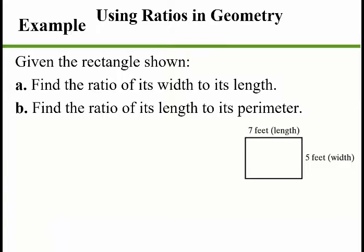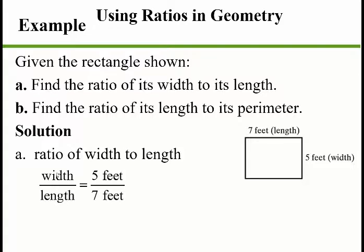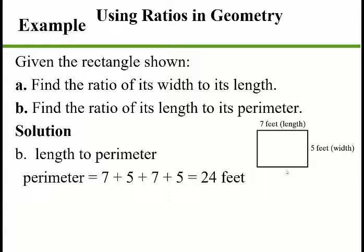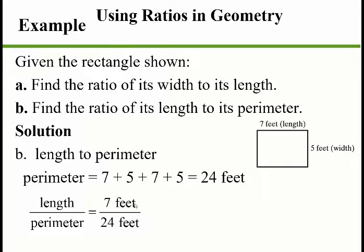Let's use ratios with geometry. Given a rectangle, find the ratio of its width to its length, and the ratio of its length to its perimeter. Width is 5 feet, length is 7 feet — first quantity on top, second on bottom — so width to length is 5 to 7 (units cancel). For length to perimeter, first find the perimeter: the sum of all sides is 24 feet. Length to perimeter is 7 to 24, and nothing cancels there.